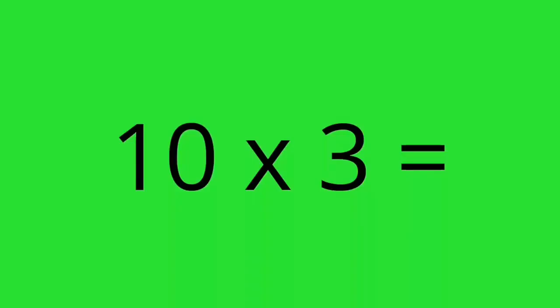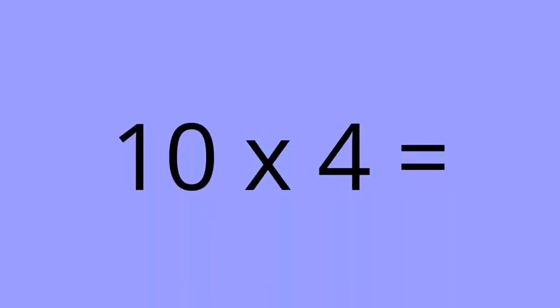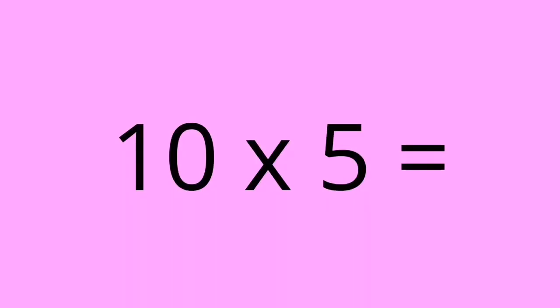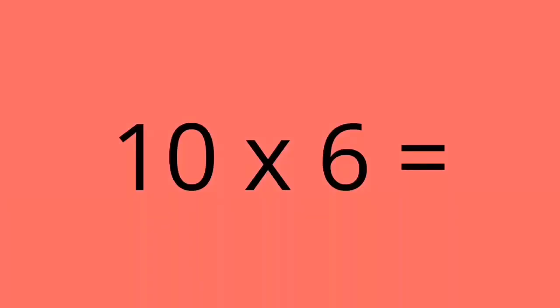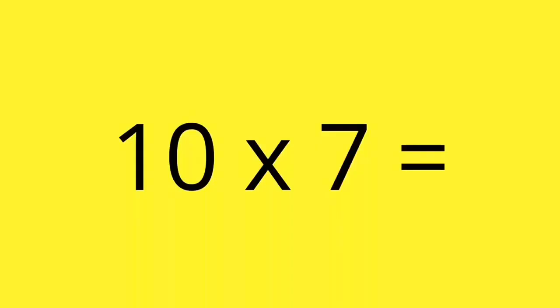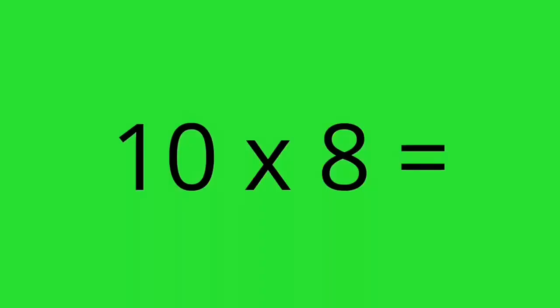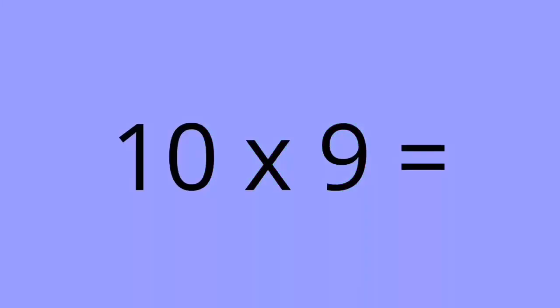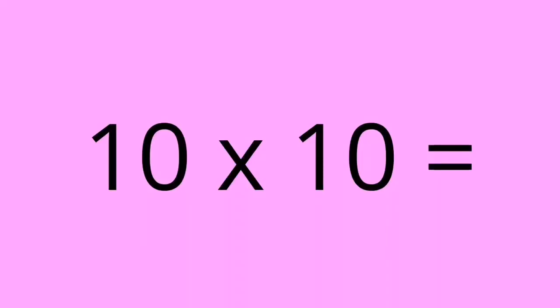10 times 3 equals 30. 10 times 4 equals 40. 10 times 5 equals 50. 10 times 6 equals 60. 10 times 7 equals 70. 10 times 8 equals 80. 10 times 9 equals 90. 10 times 10 equals 100.